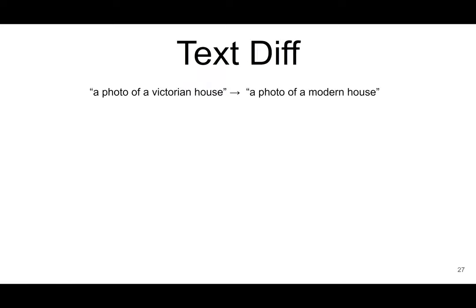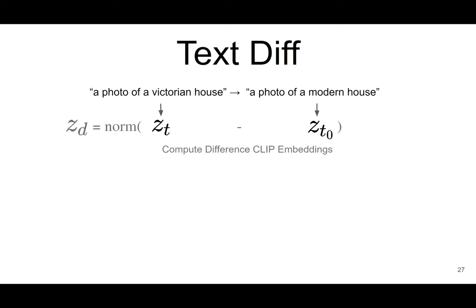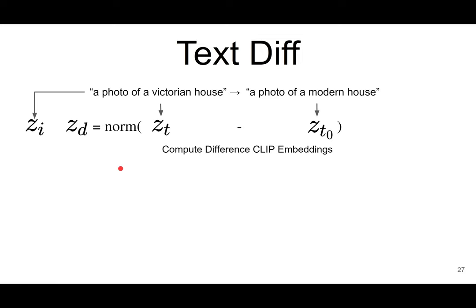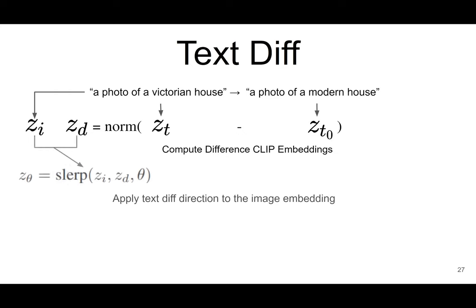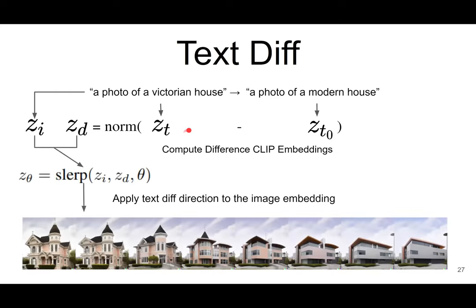Next is text differentiation. The idea is that given a text and an image, we want to update the image by providing a new text. We have two text embeddings, ZT and ZT0. We do the subtraction between them to compute the difference CLIP embedding, then carry the image embedding and pass both into the SLERP algorithm to produce a new variable ZT, which we use to interpret the generative results. The house gradually changes from one artistic style to a new style according to the updated text information.